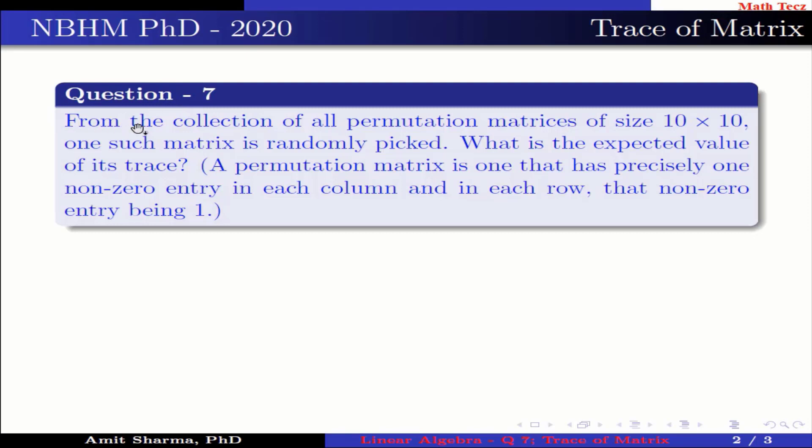The question is: from the collection of all permutation matrices of size 10 by 10, one such matrix is randomly picked. What is the expected value of its trace?